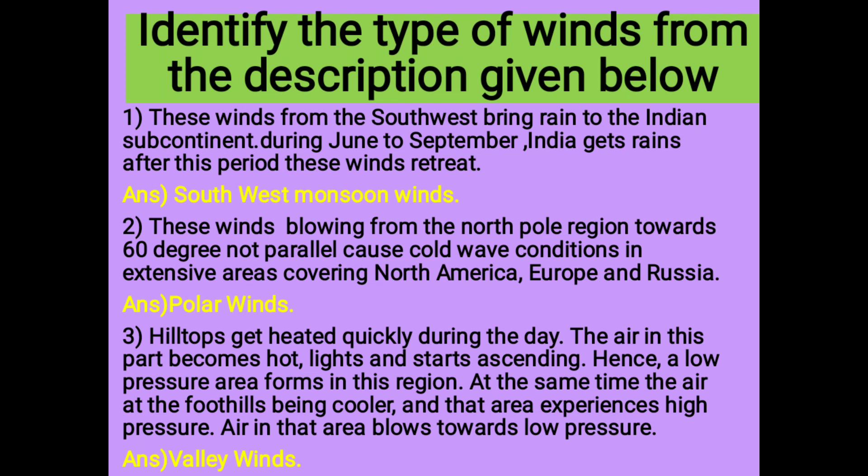3. Hilltops get heated quickly during the day. The air in this part becomes hot, light and starts ascending. Hence, a low pressure area forms in this region. At the same time, the air at the foothills being cooler means that area experiences high pressure. Air in that area blows towards low pressure. Answer: Valley winds.